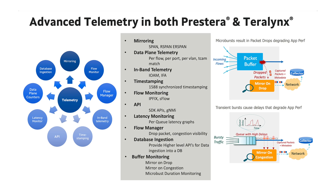Data center operators need deep insights into their networks to understand behavior and mitigate potential downtime. Both the TerraLynx and Prestera product families provide extensive telemetry data. The Prestera product family can generate a rich set of network telemetry including flow-level metrics such as latency, per-color counters, rates, and buffer utilization, as well as elephant flow detection and notifications. It can also utilize in-band network telemetry methodologies such as INT, IOAM, and IFA for data export.